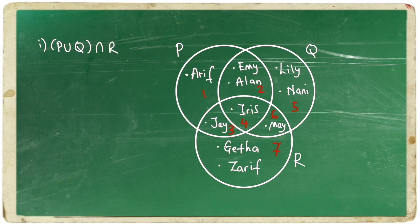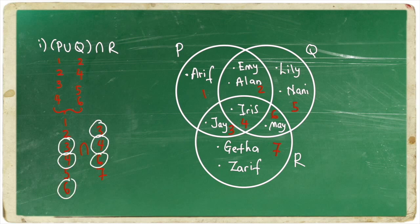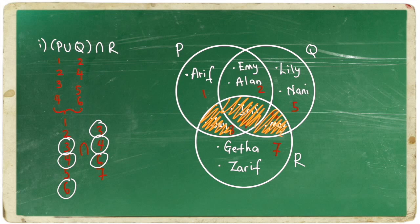Now, let's have a look at the first question. First, we look at P. We list down all the digits of P. And then Q. The operation is union. It means you combine all the digits. Next, we intersect it with R. The numbers in R are 3, 4, 6 and 7. Intersect means whatever digits that are the same. So, we have 3, 4 and 6. So, we only shade the region with the number 3, 4 and 6.